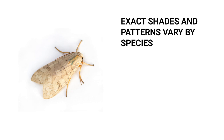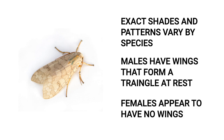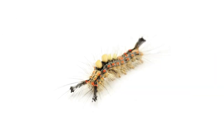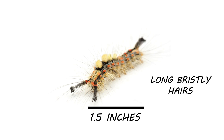Tussock moths are easiest to identify as caterpillars. As adults, they look like many other moth species with various ground markings and patterns. Male moths have long wings and are capable of flight, while female moths have shorter, stumpier wings rendering them incapable of flying. As caterpillars, they have a very distinct look that distinguishes them from other caterpillars. Tussock moth caterpillars hatch as tiny worms, which then grow to be one and a half inches in length once fully matured.